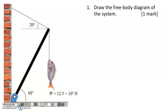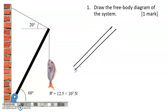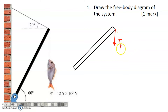The first question: draw the free body diagram of the system. For this particular system, we will be drawing the free body diagram of the rod. The first force is going to be the tension due to the weight of the fish. I will be labelling it as T with the subscript F — tension due to the weight of the fish.